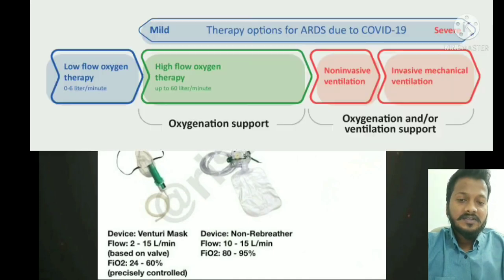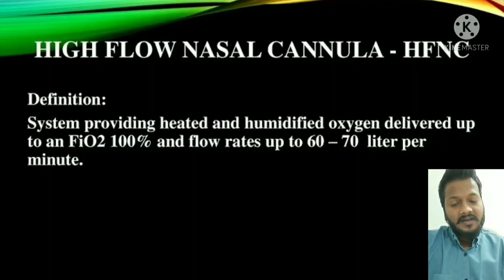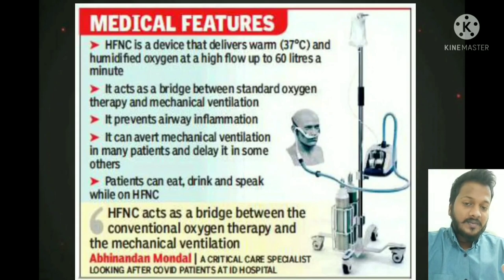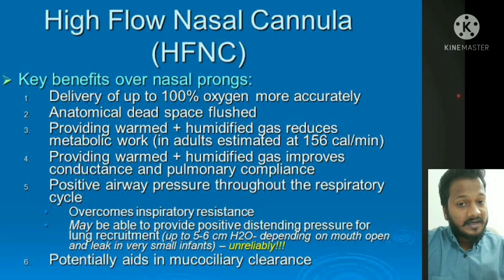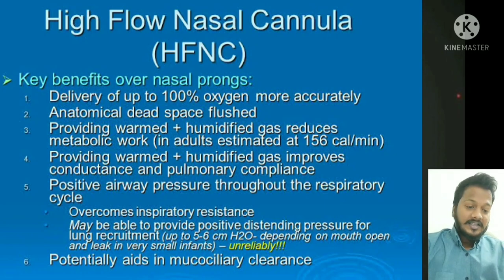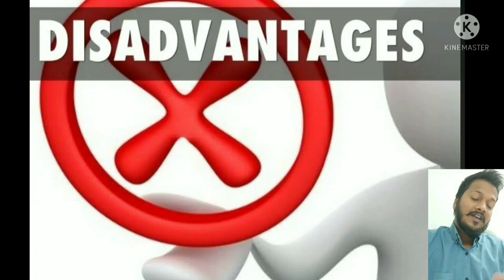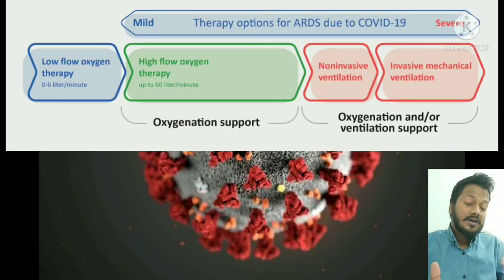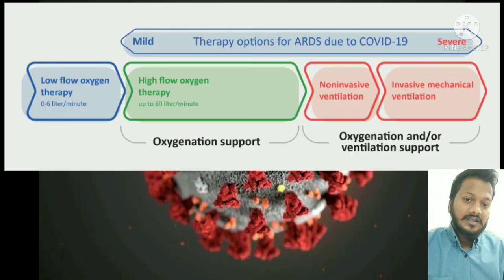When step 1 fails, we go to step 2: high-flow nasal cannula (HFNC), which delivers 40–60 liters per minute and achieves up to 100% FiO2. Important points: it delays or prevents intubation, delivers humidified oxygen, allows awake proning, and decreases dead space by removing carbon dioxide from conducting airways. It creates positive pressure — PEEP of around 4–6 cmH2O during inspiration. Disadvantages include high oxygen requirement and nasal bleed. Step 3 (if step 2 fails): non-invasive ventilation — BiPAP and CPAP. Step 4: mechanical ventilation, which carries a 50-50 chance of outcome, and finally ECMO (extracorporeal membrane oxygenation).